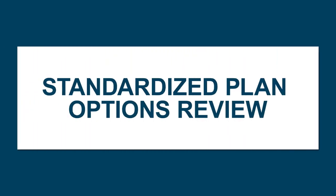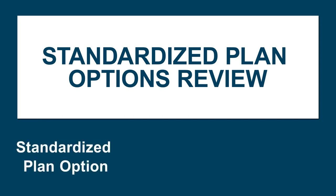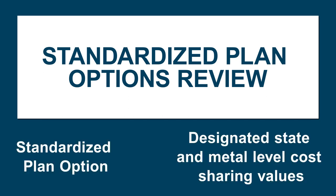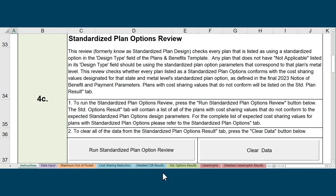The third review in this tool is the Standardized Plan Options Review. This analysis checks every plan that is listed as using a standardized plan option in the Design Type field of the Plans and Benefits template, and confirms it conforms with the cost-sharing values designated for that state and metal-level standardized plan. To run the analysis now, click the Run Standardized Plan Options Review button. When you run the Standardized Plan Options Review, the results will populate on the Standardized Options Results tab.